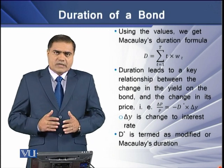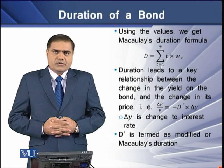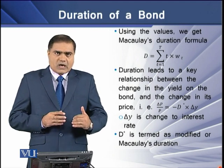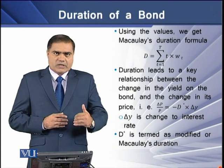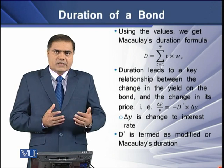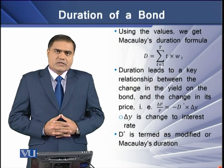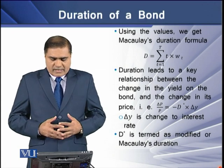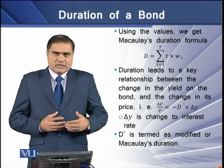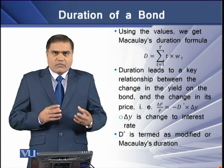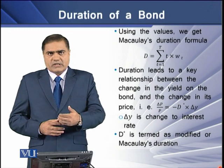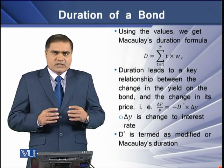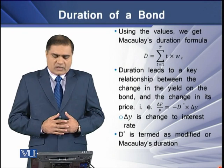Using all these values, we get Macaulay's duration formula. The formula states that the cash flows at time T are multiplied with the individual weight of those cash flows, and their overall sum is termed as the bond's duration. Duration leads to a key relationship between the change in yield on the bond and the change in its price. The price change is a function of D* and the change in yield, where D* is termed as the modified or Macaulay's duration.